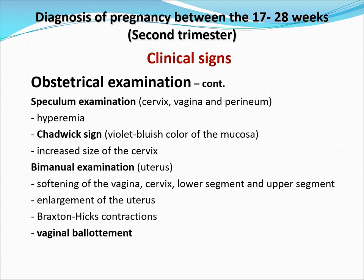Your abdominal examination would be your Leopold's maneuvers. Leopold's 1 would look at the fundus of the uterus to see if the head or the buttocks is there. Then you palpate the maternal sides — Leopold's 2 — to look for the fetal back and fetal limbs. Leopold's 3 is your Pawlik's grip; you confirm your findings from Leopold's 1. And Leopold's 4 would check for engagement — if the fetus is already engaged. Your speculum should check for hyperemia, your Chadwick sign, and increased size of the cervix. Your bimanual examination would check for softening of the vagina and the lower and upper segment, enlargement of the uterus, Braxton-Hicks contractions, and vaginal ballottement to see if the head is in place through the vagina and the cervix.